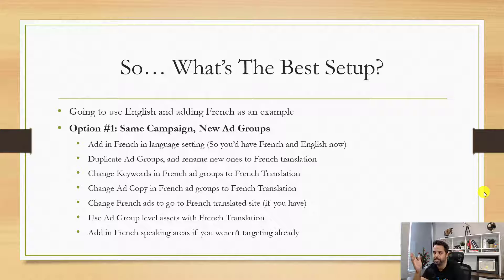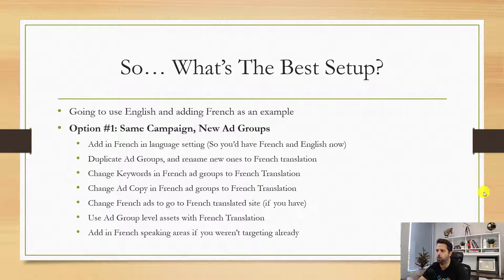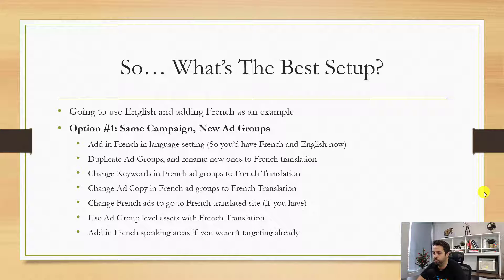A lot of times there's a translate button on your website and the URL changes — maybe something like slash French. Your ads can then go to the French site, which is really nice when they're typing in a French keyword and seeing a French ad. But a lot of you won't have that. You'll also use ad group level assets with the French translation, because right now your assets are all going to be in English. Assets — previously called extensions — are the little things that show up below your ad. You could also add in French speaking areas if you weren't targeting those already, like Quebec, which is Canada's primary French speaking province.